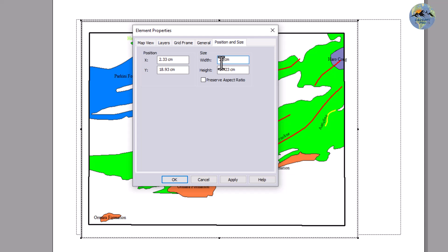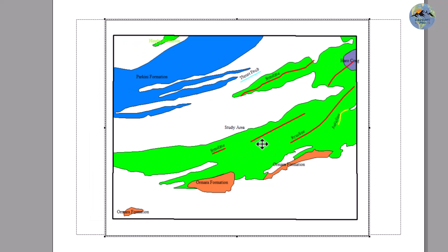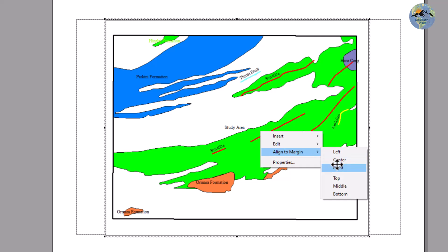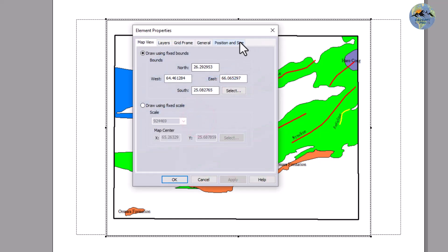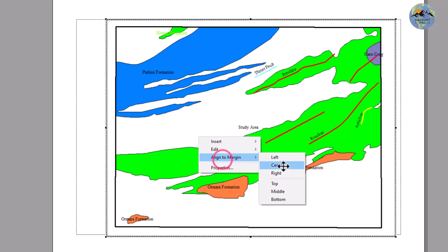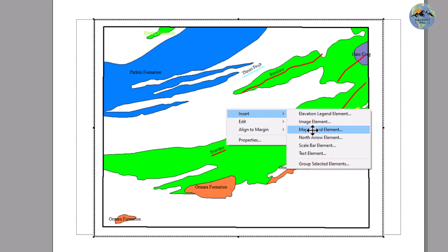Let me set it to 21, and now arrange it — you can centralize it, align it, and place it in the center like this. Then click on it. I think I should increase the size a little more to 23. Click OK, align it in the center, and now insert the map legends.